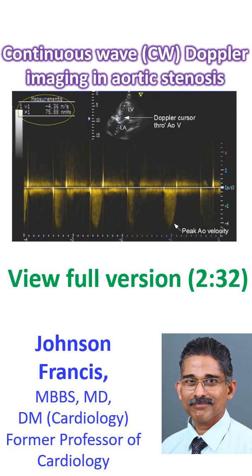Aortic stenosis produces a high velocity jet of blood across the aortic valve. This high velocity jet can be imaged well only by continuous wave Doppler imaging, as it will be well above the aliasing velocity for pulsed Doppler.